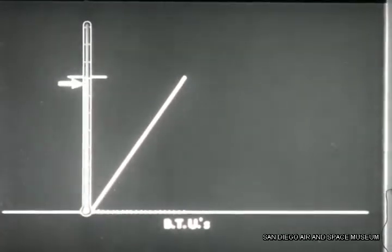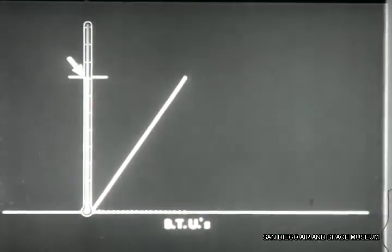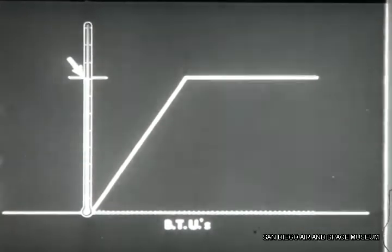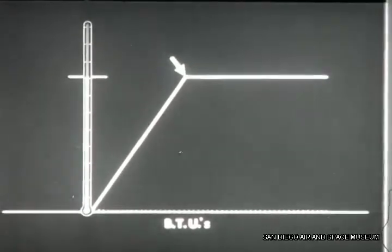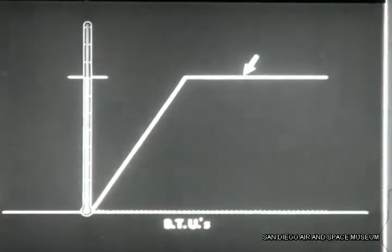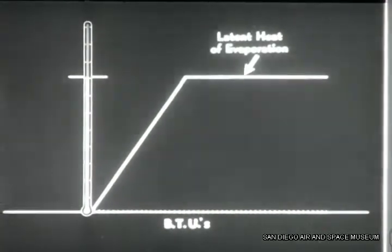Now, let's see what happens. Suppose we start with the water at a certain temperature and containing a certain number of BTUs. As the water absorbs BTUs, its temperature goes up until it finally boils at 212 degrees. But as the water absorbs more and more BTUs, its temperature stays the same. This extra amount of heat that does not affect temperature, but which we have to add to make the liquid evaporate and become a gas, is called the latent heat of evaporation.